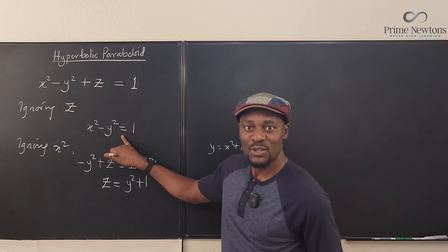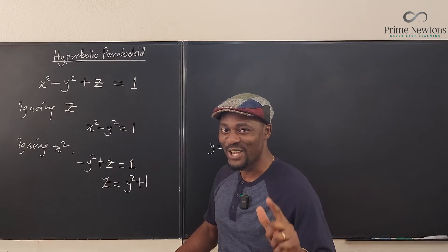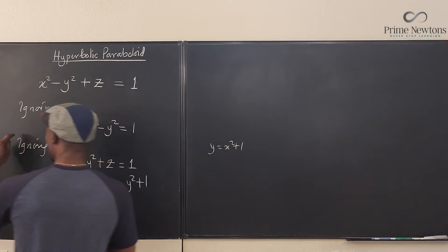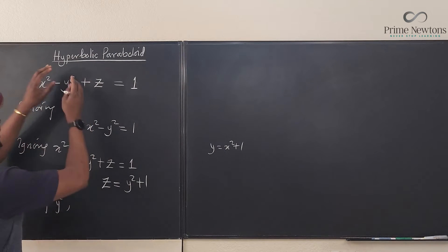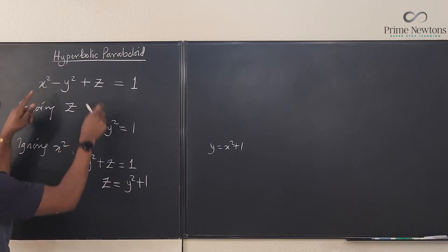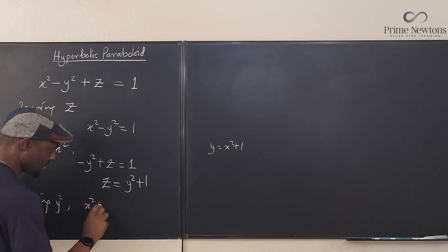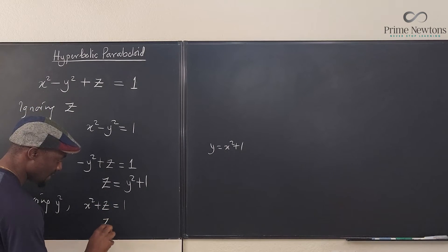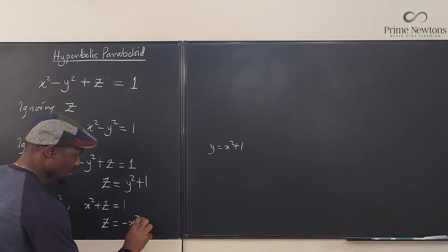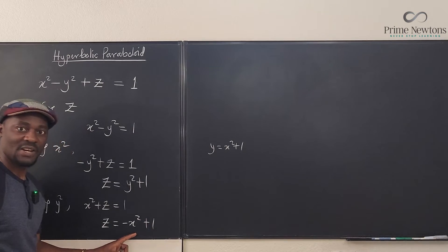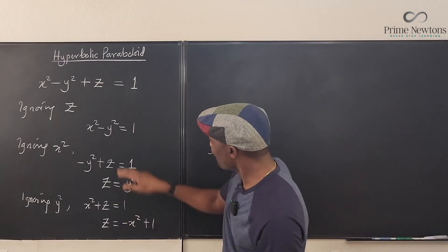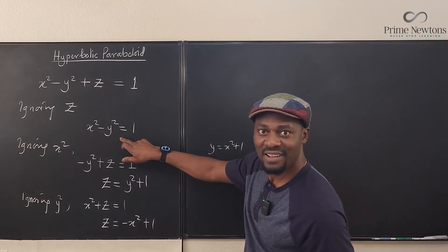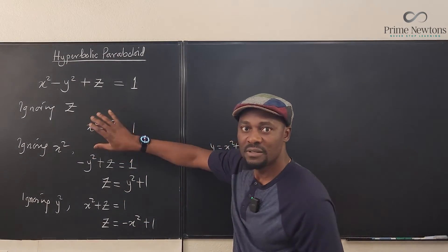So let's do one more. Ignoring y squared, what do we have? If we ignore this, we're going to have x squared plus z equals one. If you keep z, z is going to be negative x squared plus one. This is another hyperbola, just that the characteristics are slightly different.